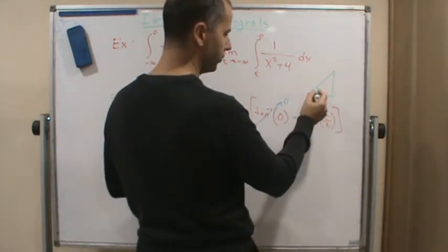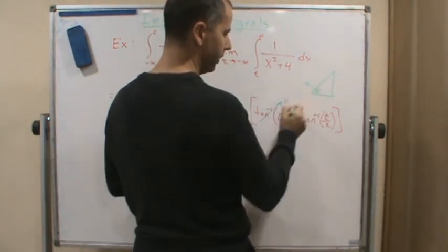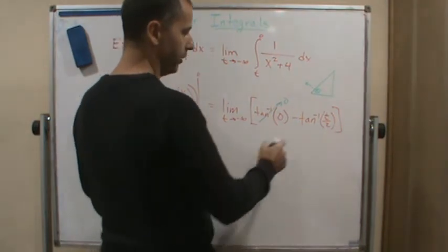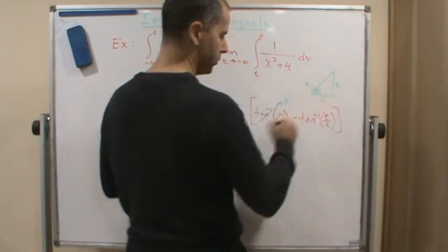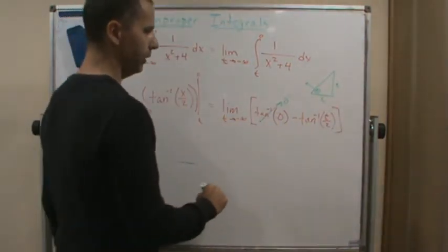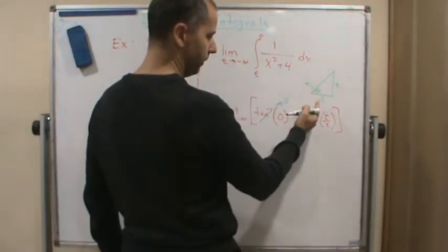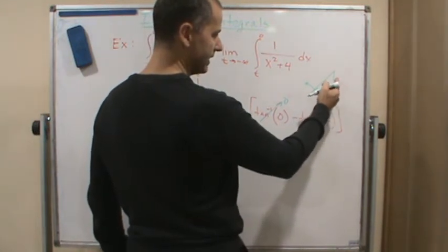The tangent of what angle? So this is getting bigger, right? Tangent is opposite over adjacent, t over 2. So this angle, this means this is getting bigger.